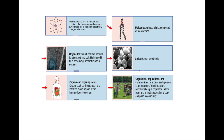Then we look at an individual organism — each of us is considered an individual organism. When you get a whole bunch of us together, that makes a population. A population is a group of organisms from the same species. If you get the same species of horses together, that's a population of horses. If you get the same species of frogs together, that's a frog population, and so on.